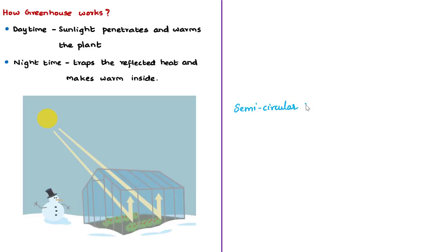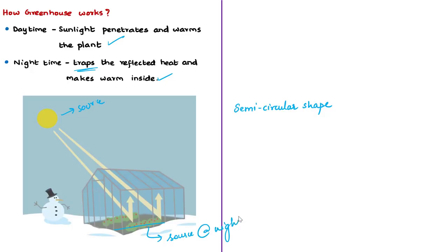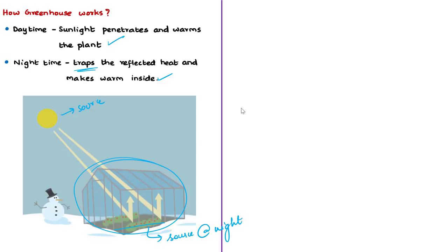In the daytime, sunlight shines into the greenhouse, warming the plants and the air inside. At night, it is colder outside, but the greenhouse stays warm because the glass or polyethylene traps the sun's heat. In the daytime the sun is the source of heat, and at night the surface is the source. The polyhouse traps the heat released by the surface at night, keeping it warm. So the greenhouse or polyhouse effectively controls the temperature.